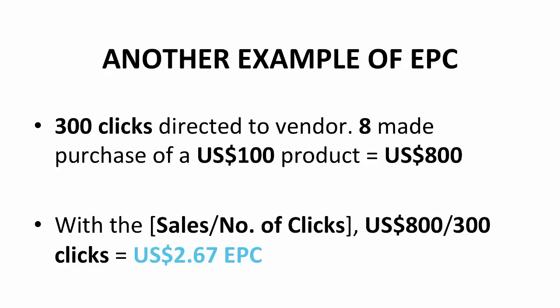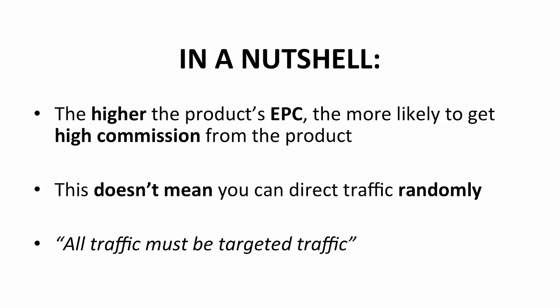Let's go through it with another example. If you direct 300 clicks to the vendor website through your affiliate links, and 8 of them make a purchase of a $100 product, your sales would be $800. With the EPC formula — sales divided by the number of clicks — you'll have sales of $800 and the number of clicks is 300. After dividing, you'll get $2.67. That amount is the EPC. Not so hard, huh? In conclusion, the higher the EPC, the more likely it is to get high commission from the product.